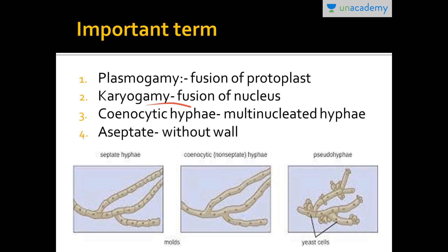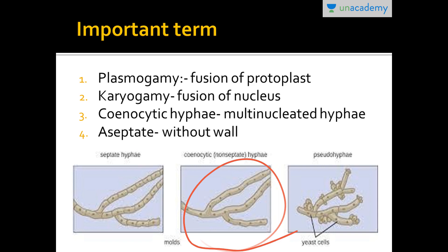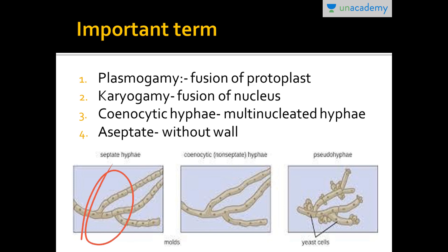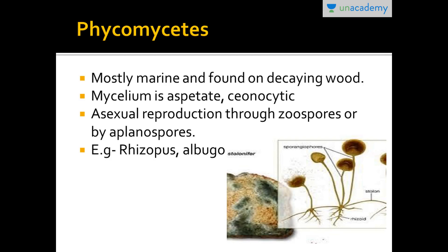Coenocytic hyphae means multinucleated hyphae — a hypha that contains many nuclei. Some fungi are aseptate, meaning without a wall. As you can see in the coenocytic diagram, many nuclei are present with no dividing wall. In contrast, septate fungi have a wall present between cells, as shown in the diagram.